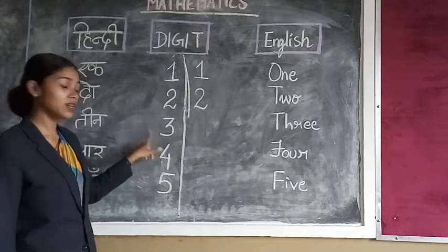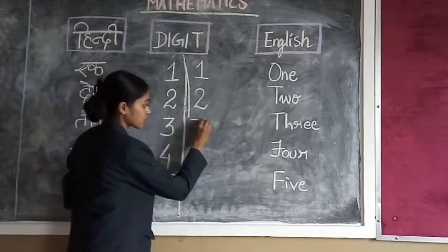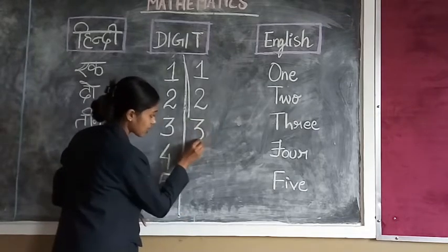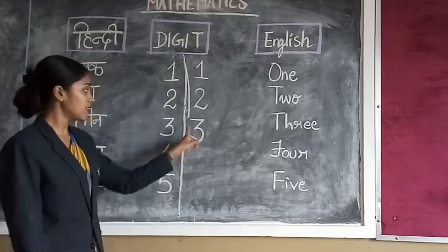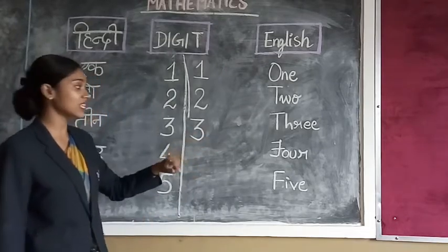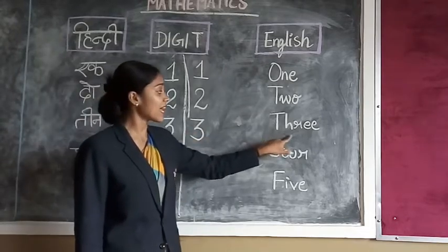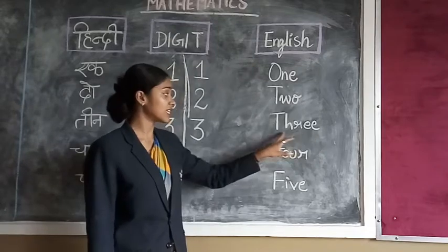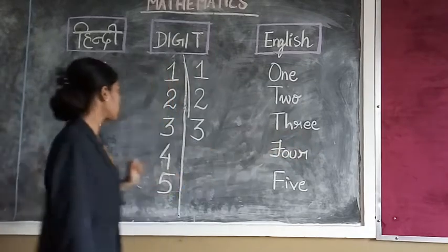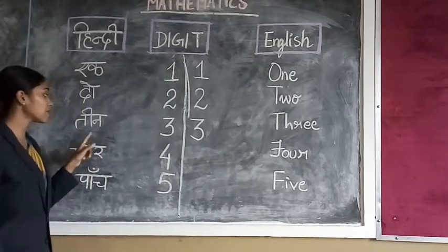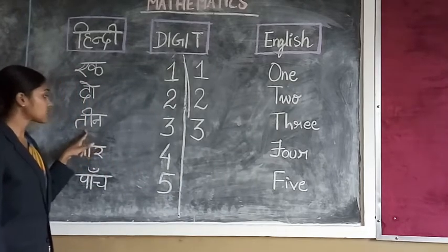Now the third number, three. Line, down line and a round. You've got three. Spelling one three: T-H-R-E-E. And this is Hindi: Teen.